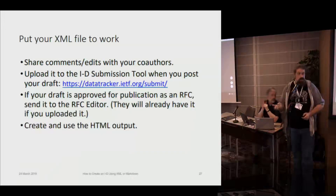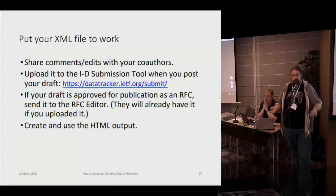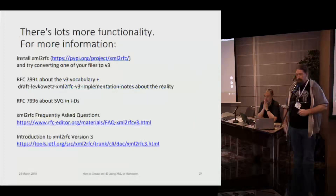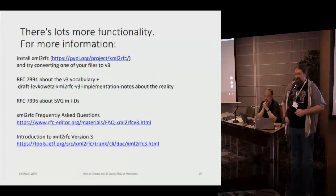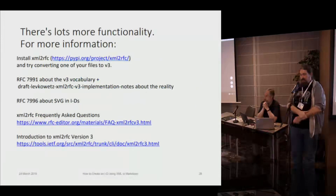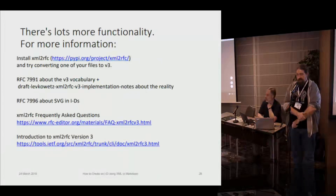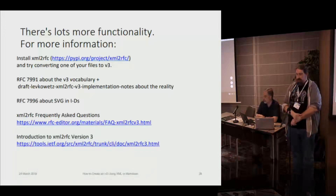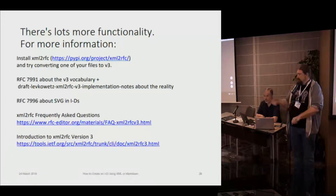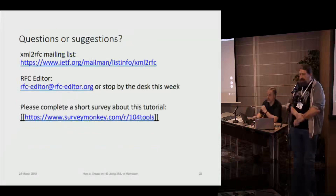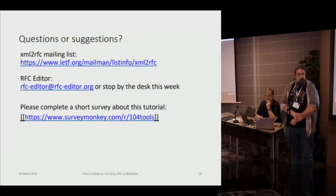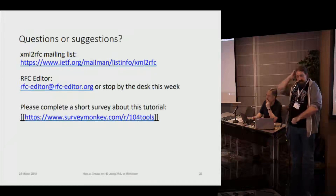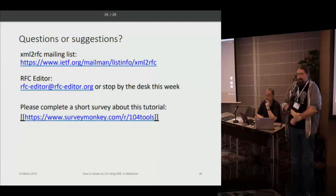You can use these to render your internet draft to HTML, which is possibly more accessible to some people. There's a lot more functionality than we can cover in this tutorial, so you can always go out and try it. You can pip install XML to RFC. Read more in RFC 7991, Henrik's updates, and for SVGs, RFC 7996. There's a frequently asked questions page; if something's not there you can reach out to Henrik. And there's a quick intro that goes over this plus some more details. If you have any questions or suggestions, you can ask now. There's also the mailing list and the RFC editor — you can either reach out on email or visit them at their desk this week.